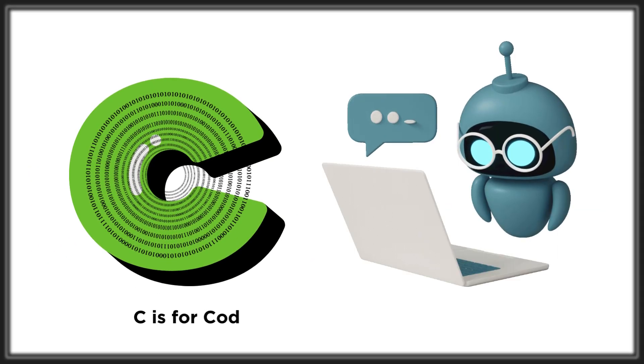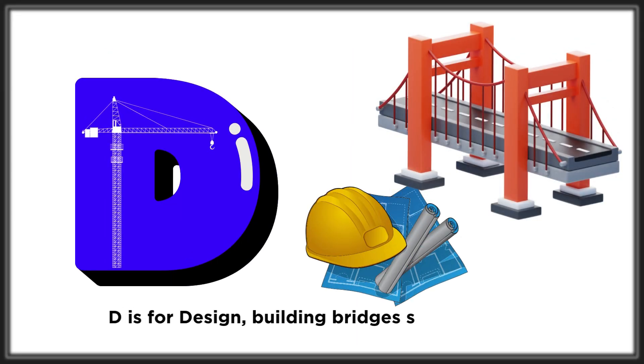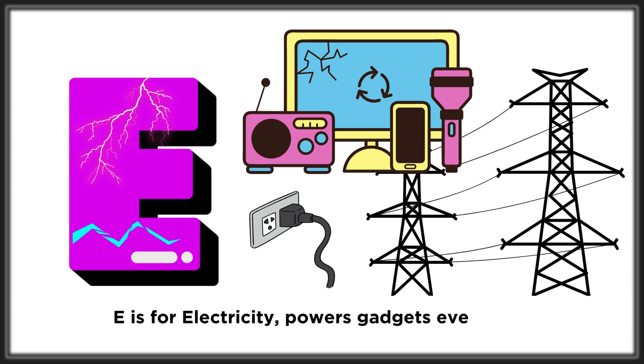C is for coding, telling robots what to do. D is for design, building bridges strong and true. E is for electricity, powering gadgets every day.